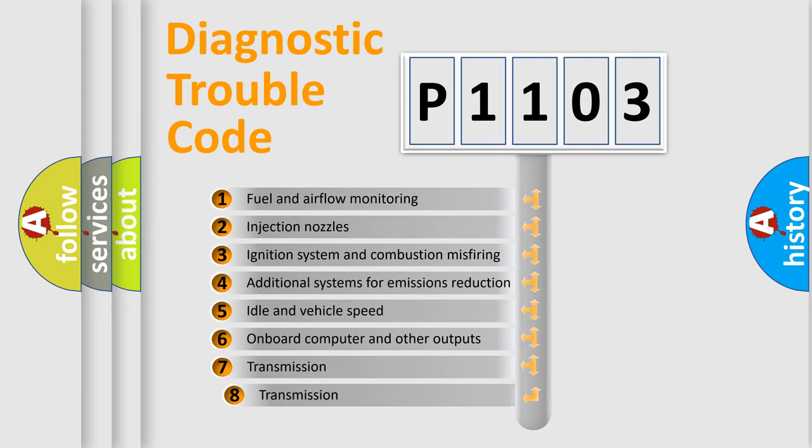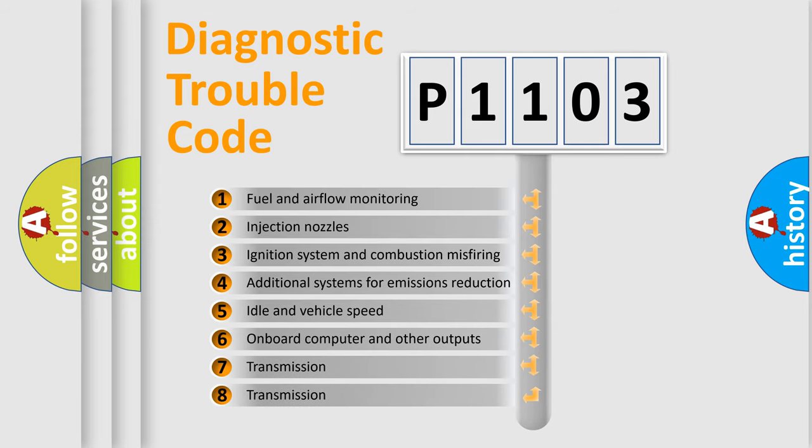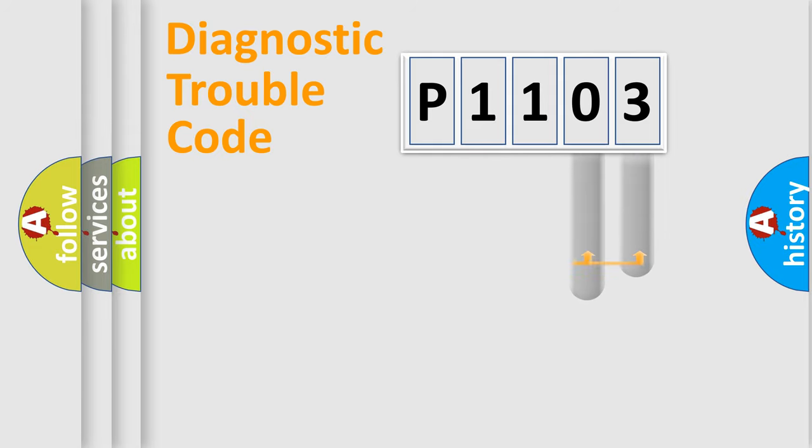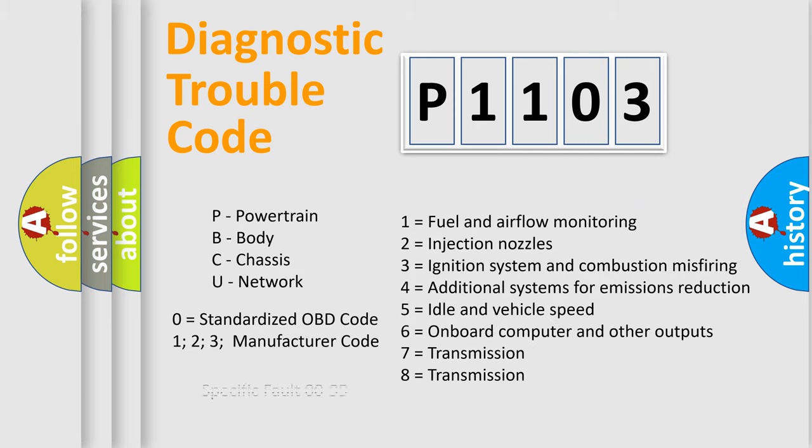The third character specifies a subset of errors. The distribution shown is valid only for the standardized DTC code. Only the last two characters define the specific fault of the group. Let's not forget that such a division is valid only if the second character code is expressed by the number zero.